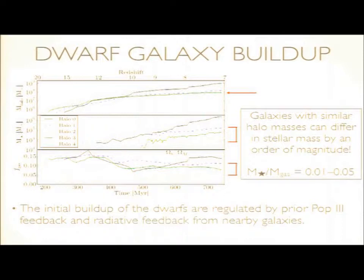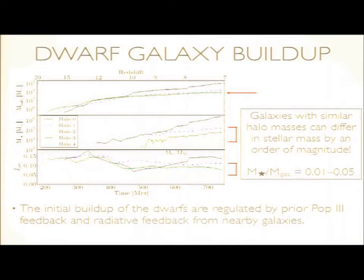In this situation it was photo-evaporated from some nearby halo, then it hosts a supernova and it completely drives all the gas out. It slowly recovers from further mergers and smooth accretion from the IGM, and this translates into a very low stellar mass content in this dwarf galaxy. But if you have more gas to form stars you can have more stars. We haven't really come up with a relation between stellar mass and gas fraction, but they vary between one and five percent.